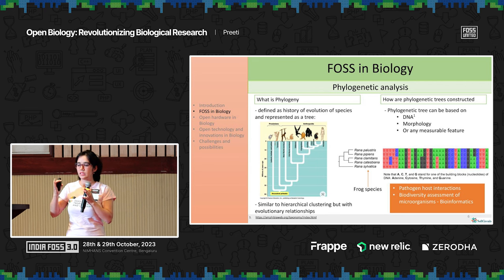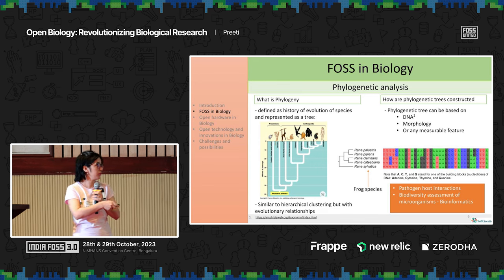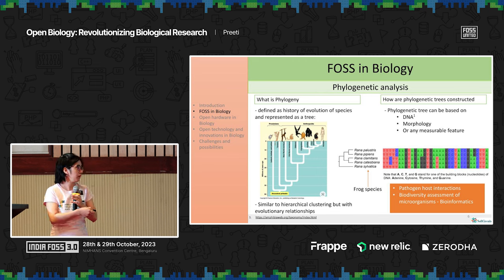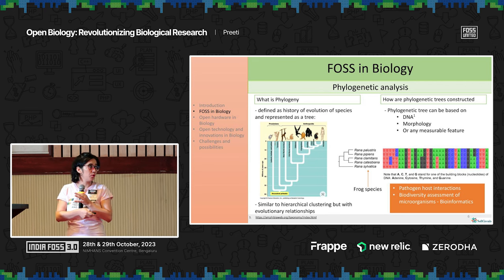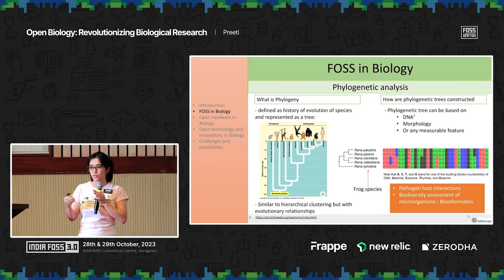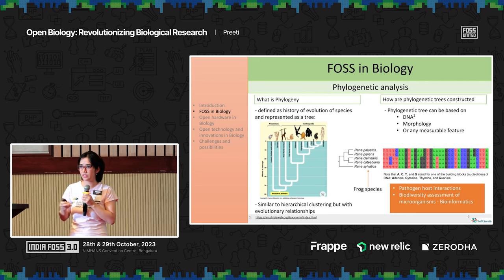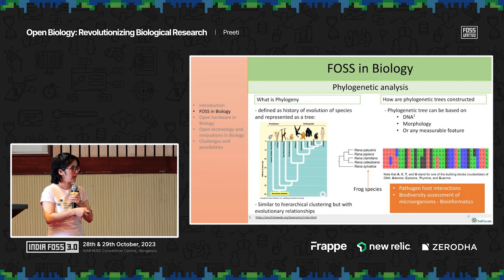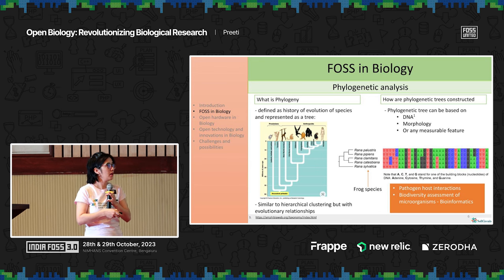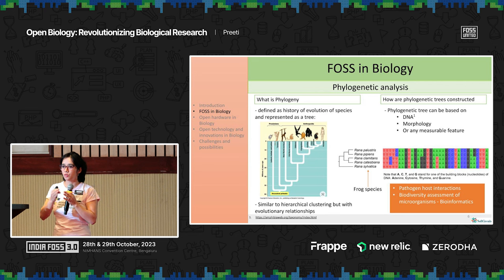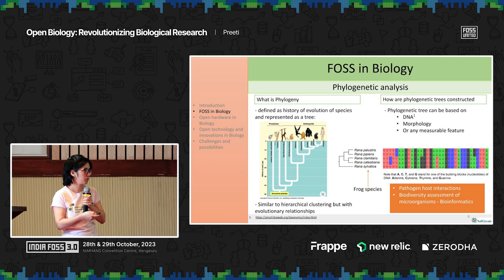Phylogeny is basically the history of evolution of species, represented as a tree — like how humans evolved and their relationships with primates. It's a hierarchical clustering representation with evolutionary relationships. You can build such a phylogenetic tree based on DNA, morphology, or any other measurable feature. DNA-based phylogenetic trees are the most accepted. You select a set of genes, extract them, sequence them — they have four building blocks, ATGC — then align them, run the phylogenetic analysis, and get the tree.